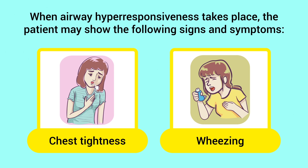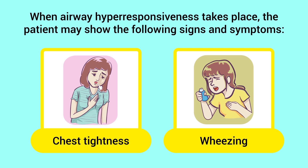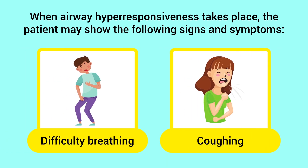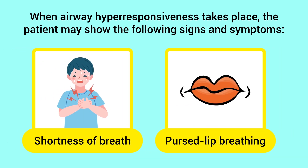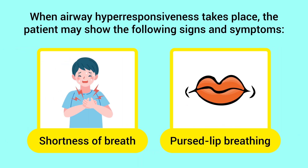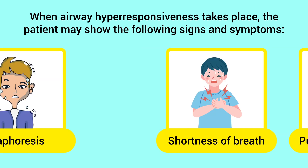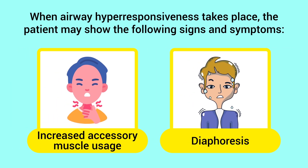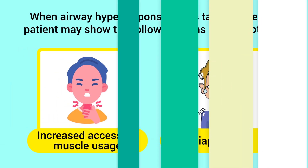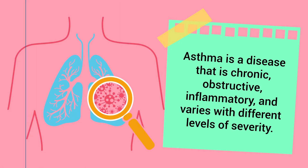When airway hyper responsiveness takes place, the patient may show the following signs and symptoms: chest tightness, wheezing, difficulty breathing, coughing, shortness of breath, pursed lip breathing, increased accessory muscle usage, and diaphoresis.